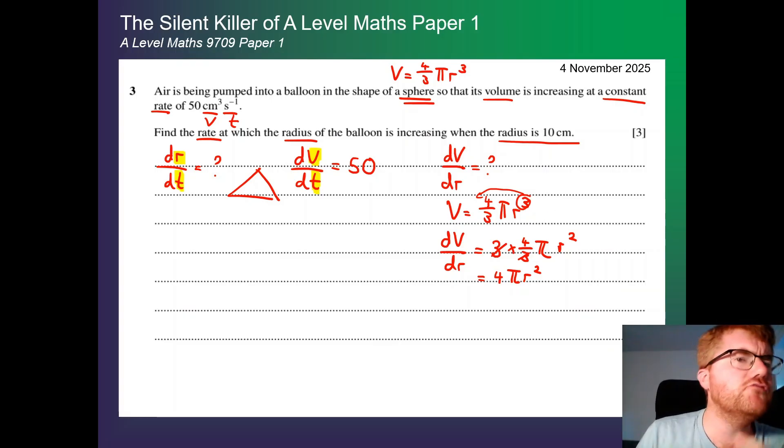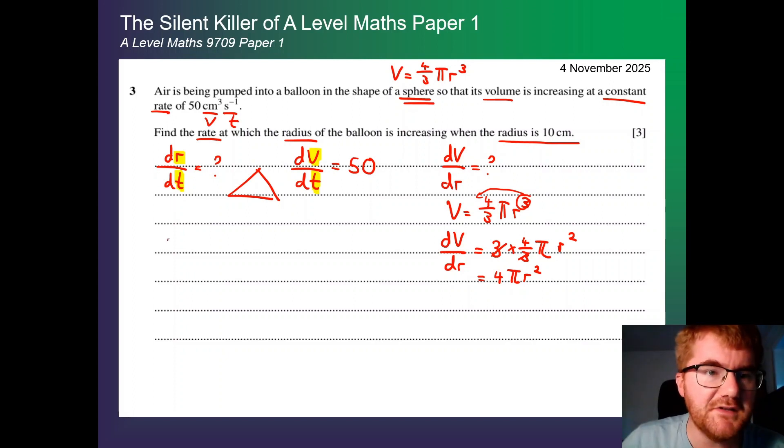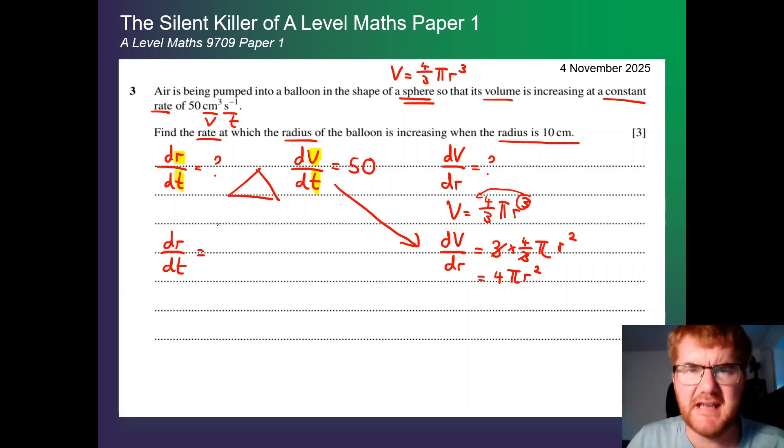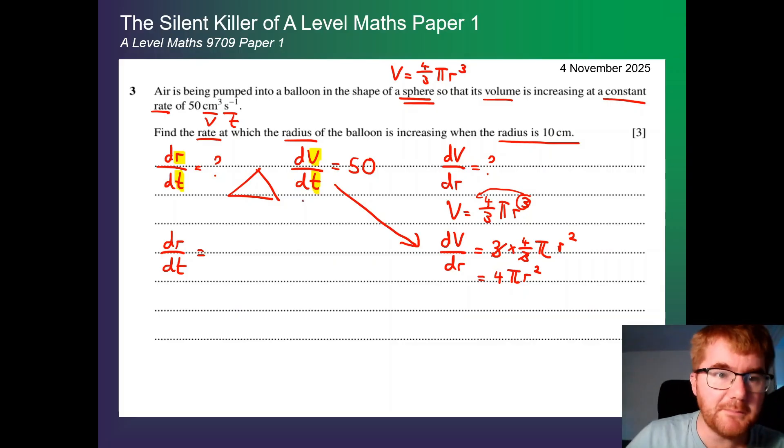Now, where does the chain rule come in here? How does this work? Well, we want to find dr by dt. That's what we're looking for. And we need a way of linking these two things together such that we get dr by dt. This is probably the most confusing step. Watch what I'm going to do here.